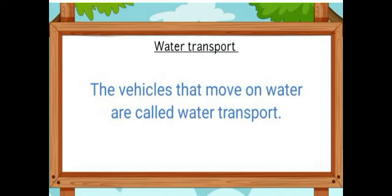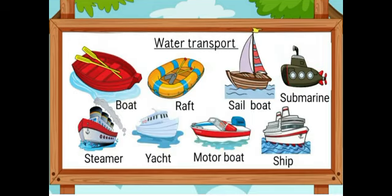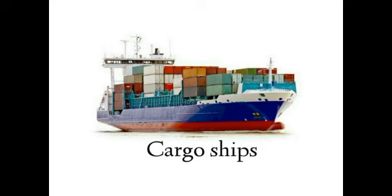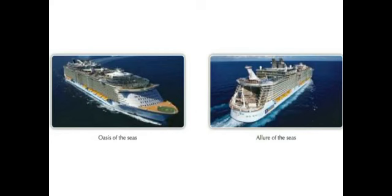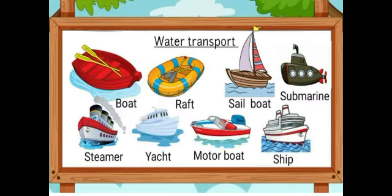Now, we learn water transport. The vehicles that move on water are called water transport. Some examples are boat, raft, sailboat, submarine, steamer, yacht, motorboat, and ship. Big ships are used to transport huge quantities of goods and are called cargo ships. The largest passenger ships in the world are Oasis of the Seas and Allure of the Seas. Water transport is the cheapest and slowest means of transport as compared to land transport and air transport.